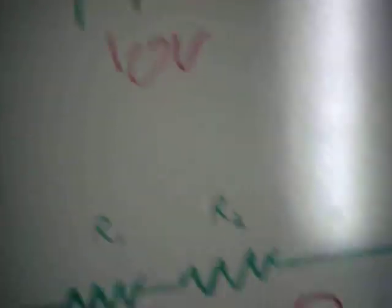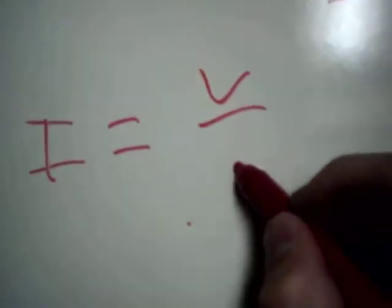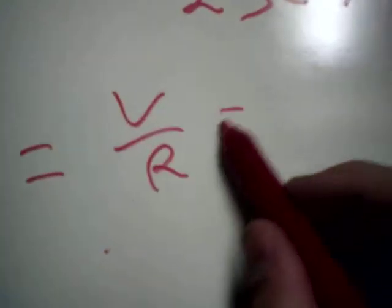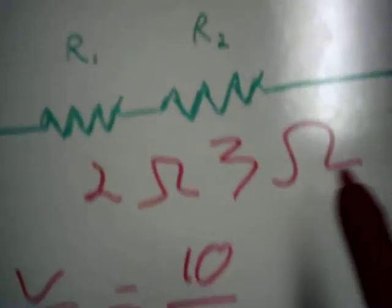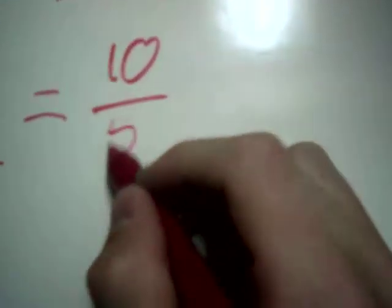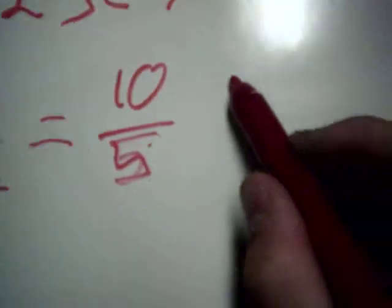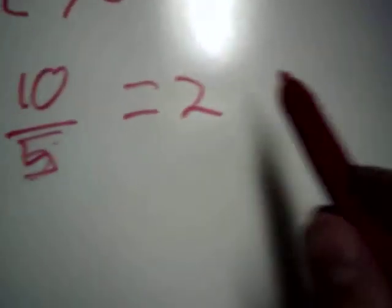First, we have to find the current, and we know with Ohm's law that I equals V over R, so it would equal 10 over, with resistors in series like this, you just add them together, so that would be 10 over 5. 10 divided by 5 is 2, because 2 times 5 is 10.